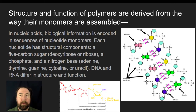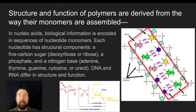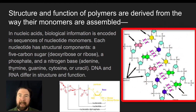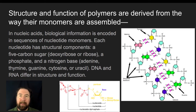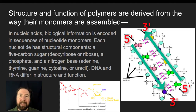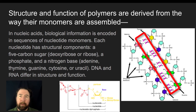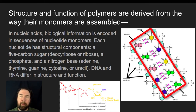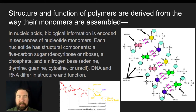Let's talk about the macromolecule of a nucleic acid. Biological information is encoded in the sequence of nucleotide monomers. A DNA molecule has two anti-parallel strands with a sugar-phosphate backbone, held together by hydrogen bonds. Inside the middle, the bases — adenine, thymine, cytosine, and guanine — are held together. For RNA, instead of thymine you'd see uracil.